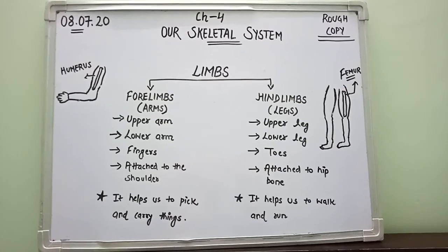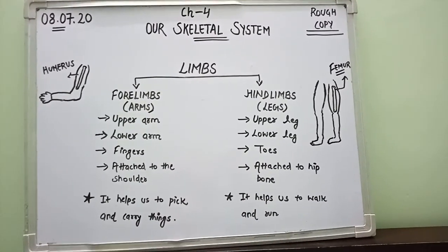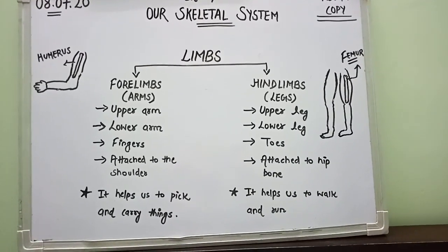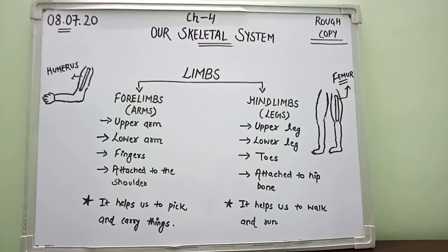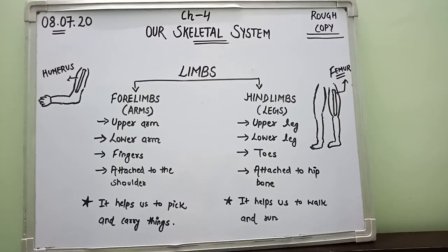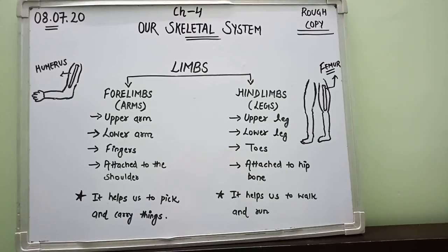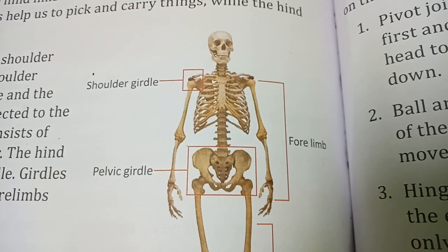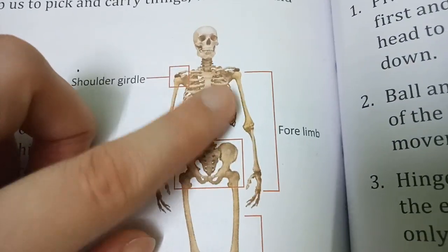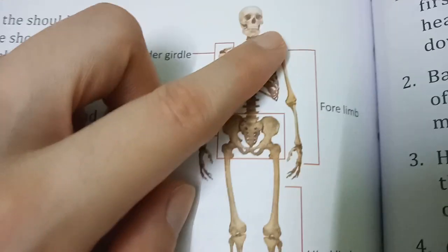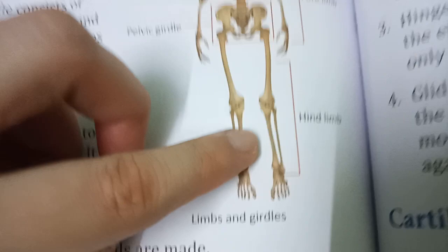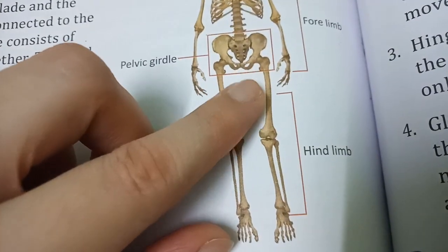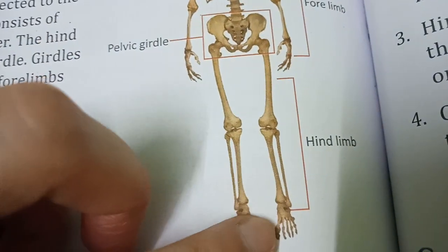We are able to do anything with the support of forelimbs and hind limbs. Without forelimbs we wouldn't be able to pick or carry things, and without hind limbs we wouldn't be able to walk or run. To recap: forelimbs consist of the upper arm, lower arm, and fingers; hind limbs consist of the upper leg, lower leg, and toes.